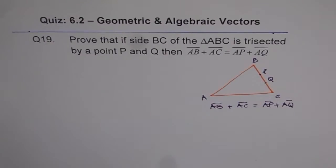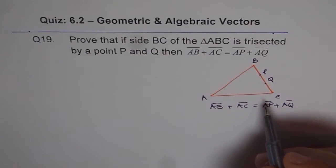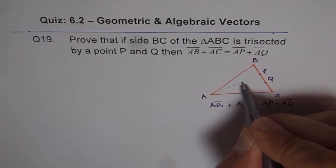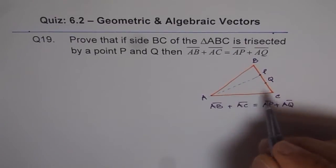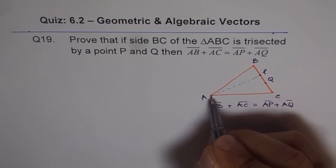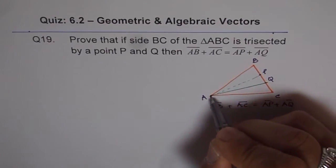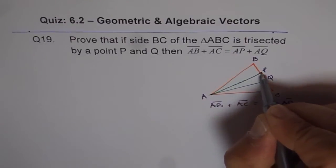So AB is this side. AC is the other side of the triangle. AP is from here to one point which is trisecting and AQ is the other one. So let me just show you. So these are our sides.